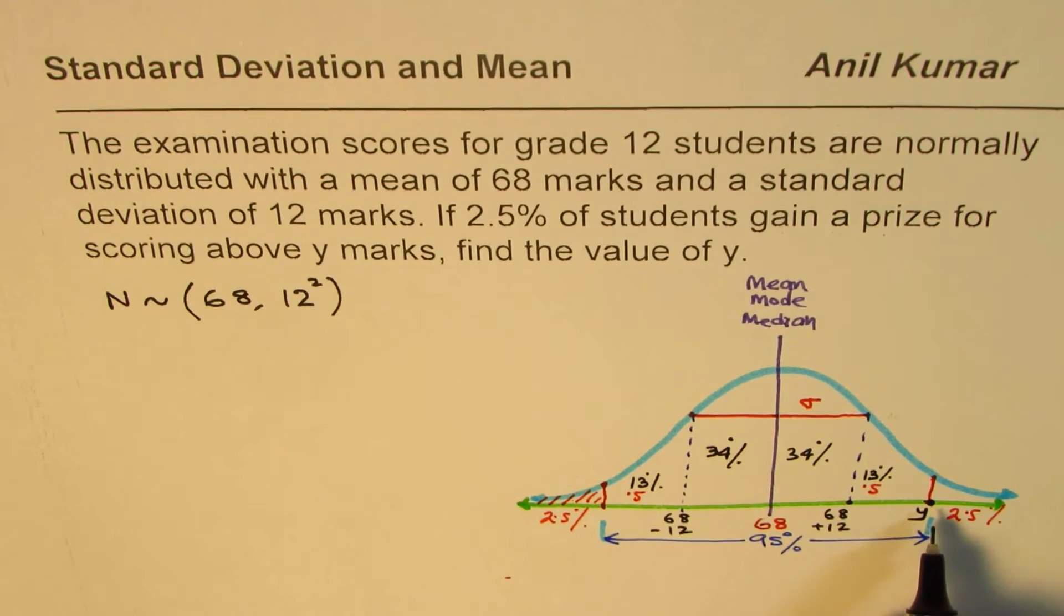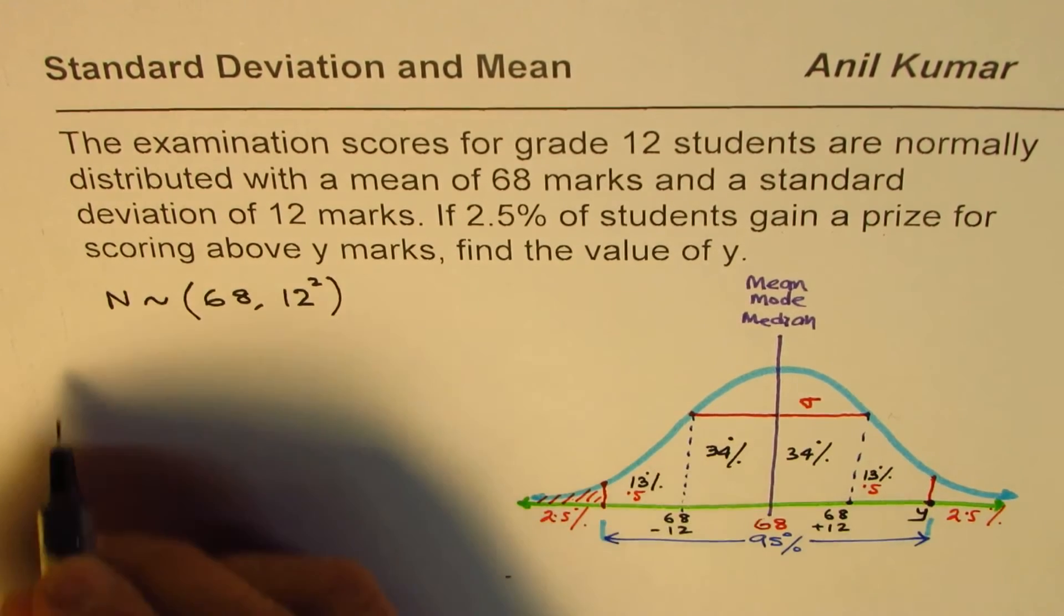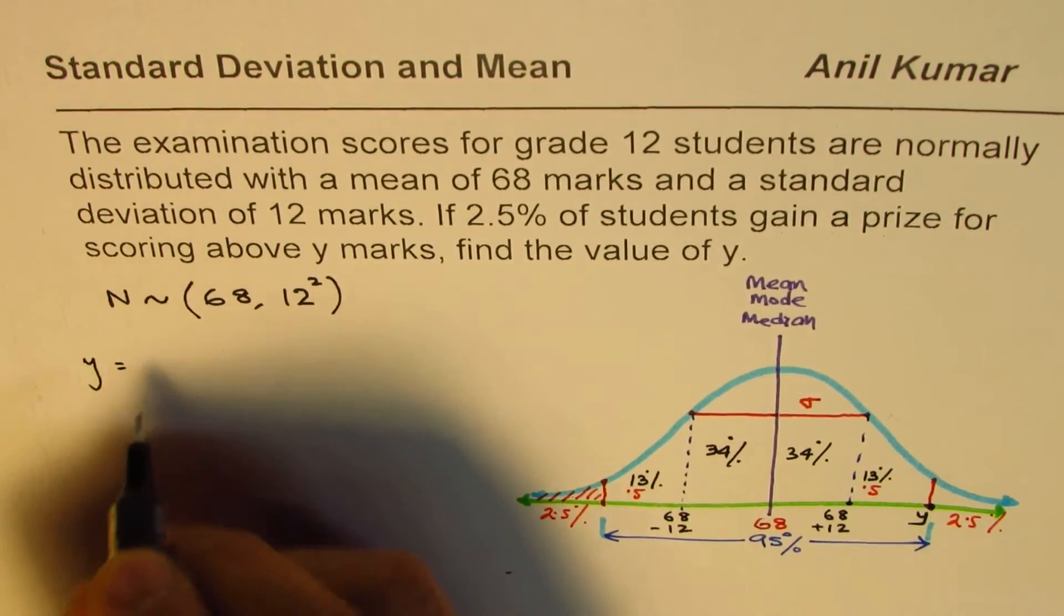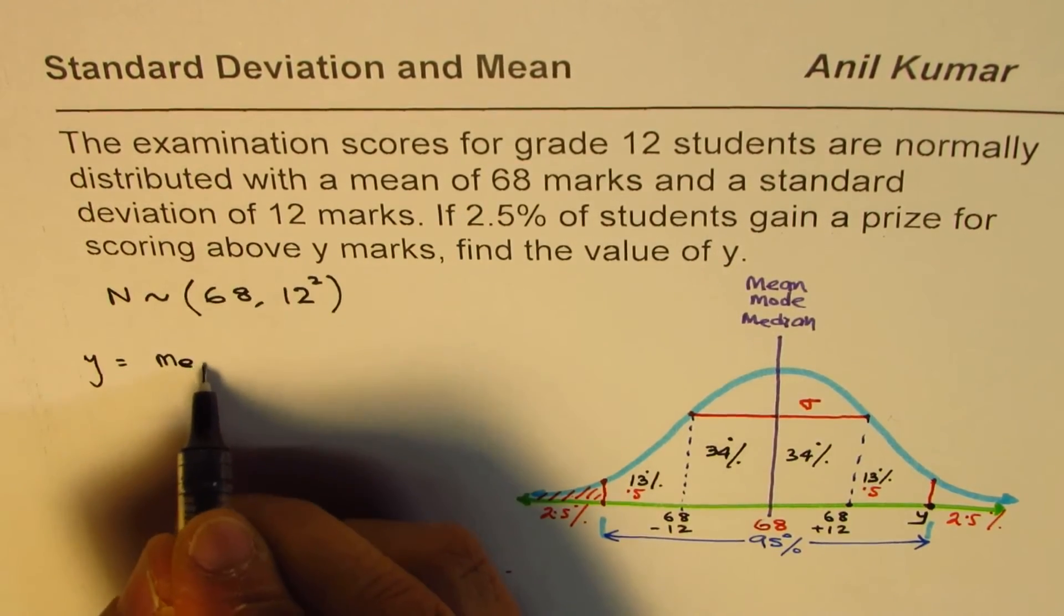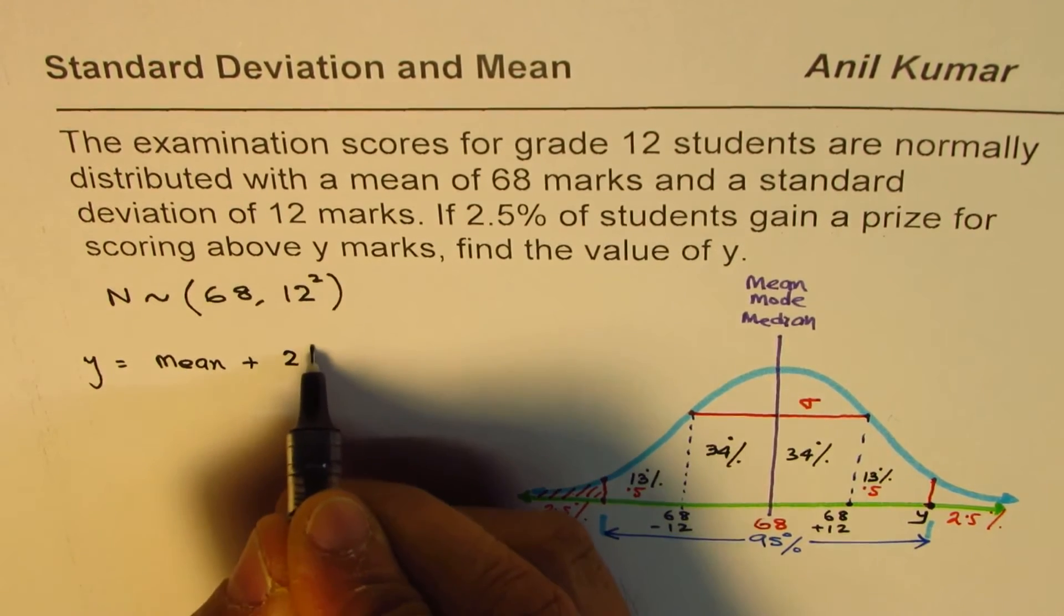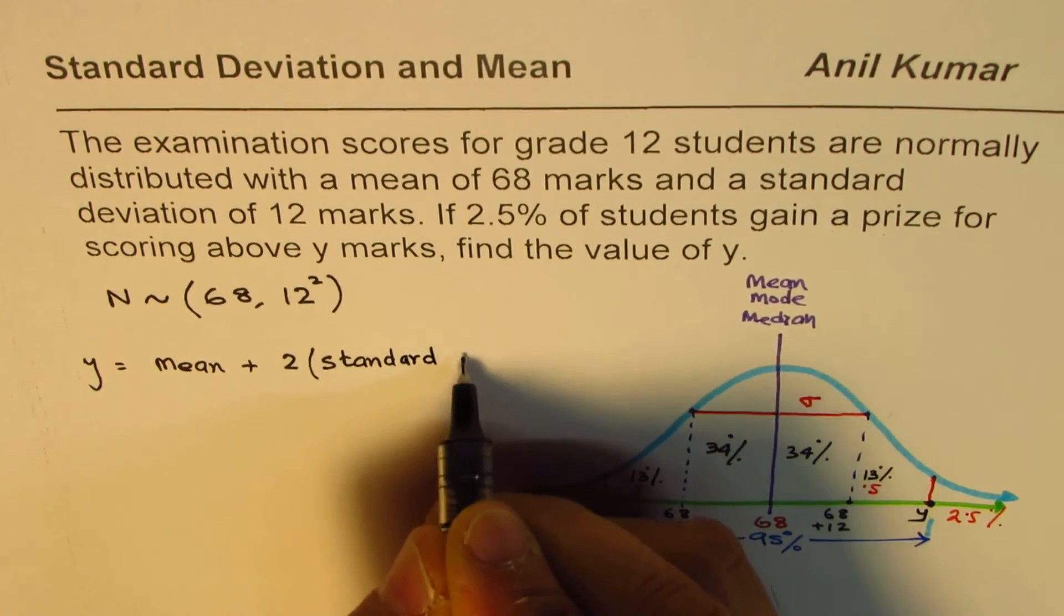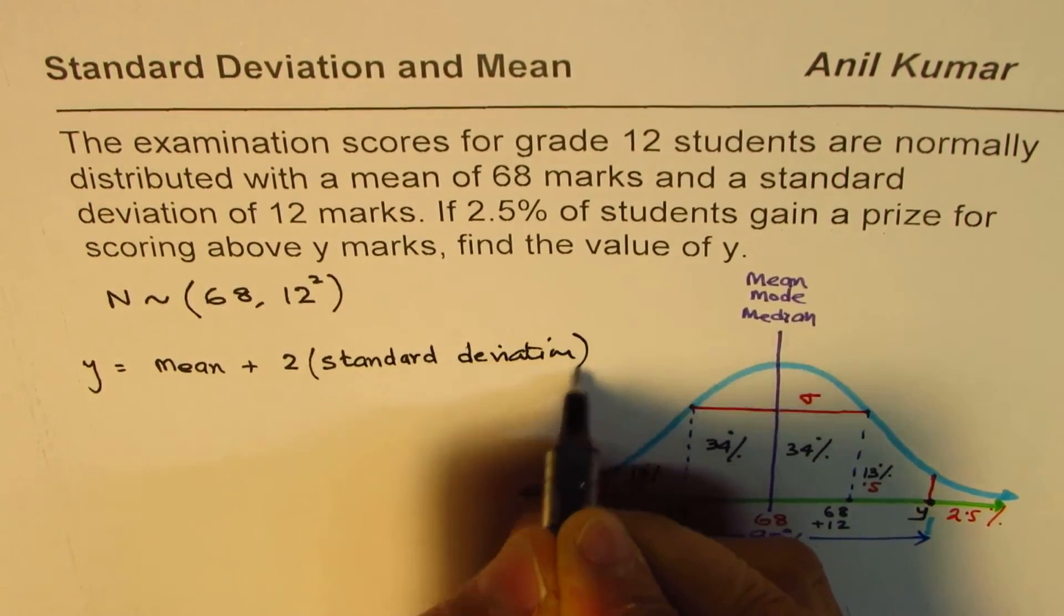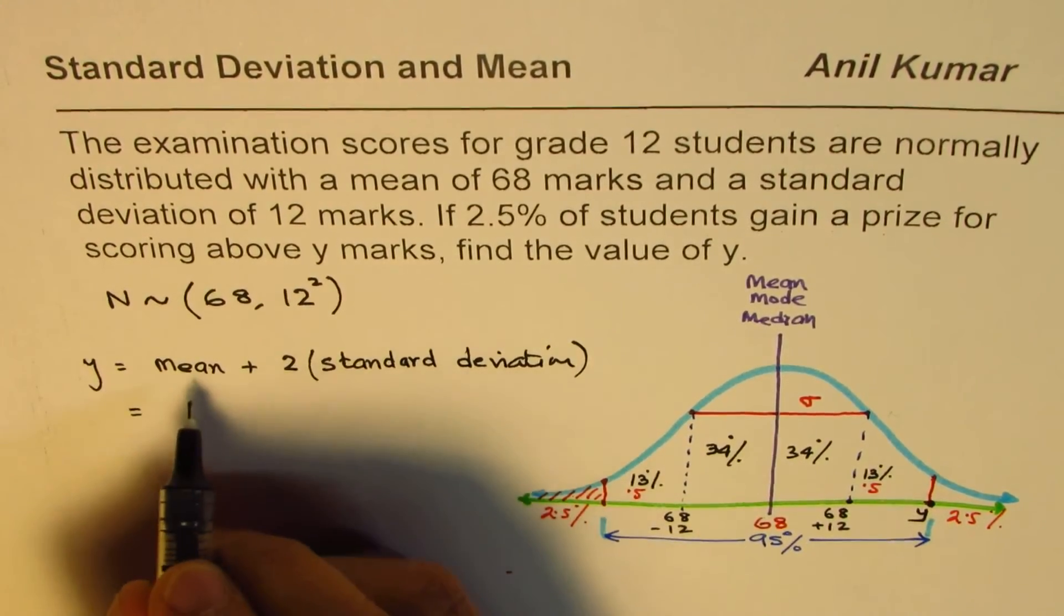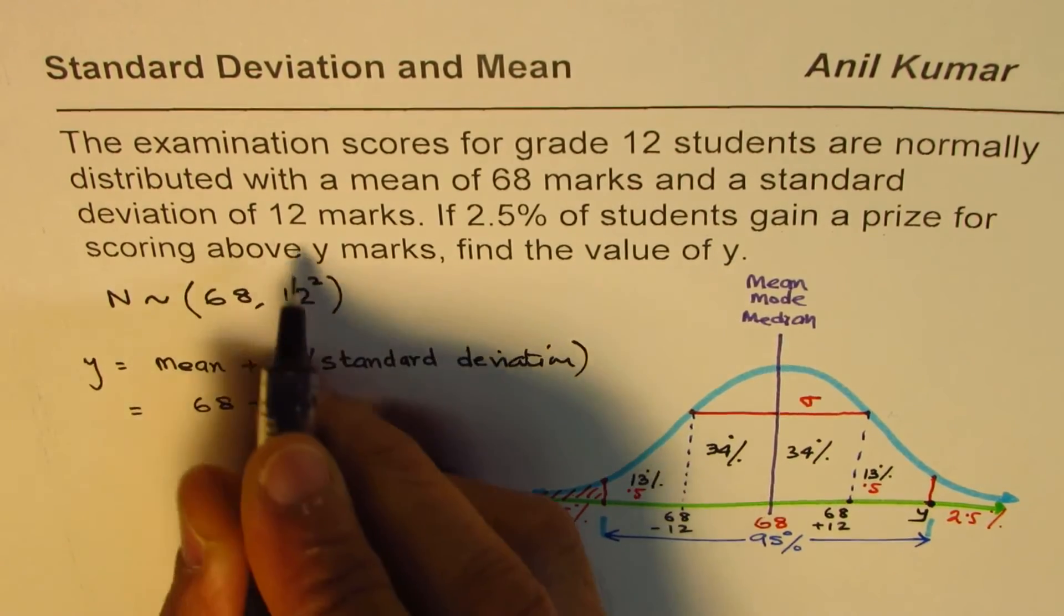In this case, as you can see, the value of y should be minimum two standard deviations away. So y for us is equal to the mean, whatever the mean value is, plus two times standard deviation. In our case, mean is 68 plus two times standard deviation, which is 12.